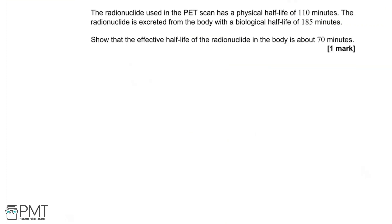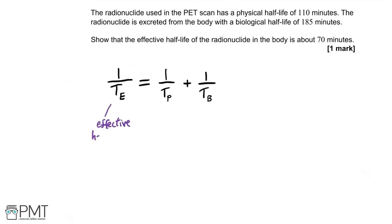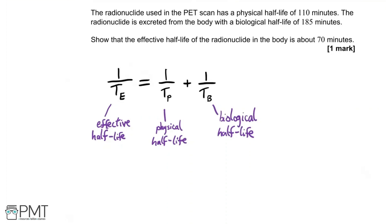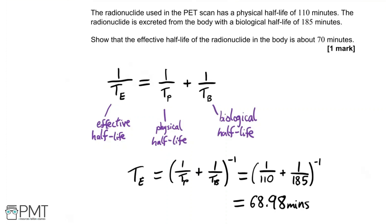The radionuclide has a physical half-life of 110 minutes and a biological half-life of 185 minutes. Show that the effective half-life in the body is about 70 minutes. Write down the equation relating the three quantities, rearrange to make effective half-life the subject, and substitute the values. This gives 68.98 minutes, which is approximately 70 minutes. To get the mark, show your calculated value with a complete method.